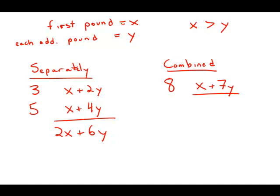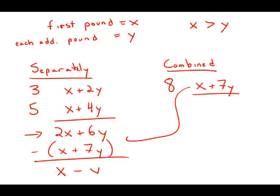What we're going to do is take this value, the cost of mailing them separately, and subtract this value, the cost of mailing them combined. And what we get is X minus Y.